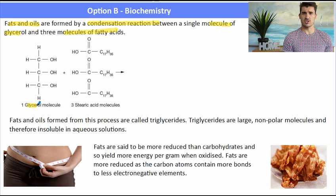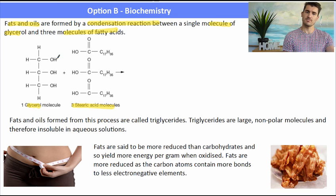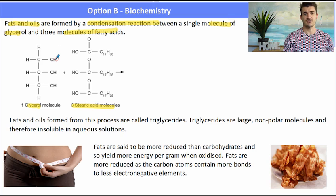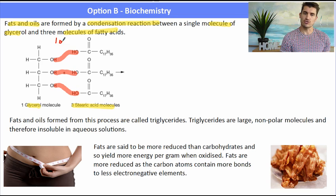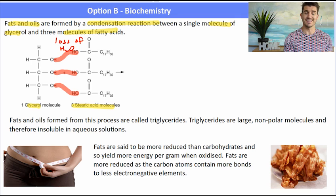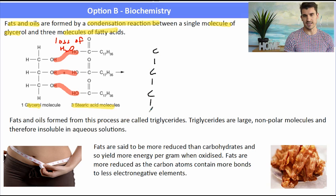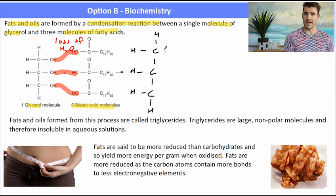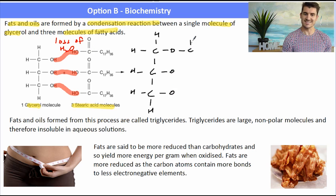Fats and oils are formed by a condensation reaction between a single molecule of glycerol and three molecules of fatty acids. Here we have a molecule of glycerol on the left and on the right we have three stearic acid molecules — three fatty acid molecules. When these two things react in a condensation reaction, we eliminate water from the link between these two molecules. Water is lost and what happens is we form an ester link between those two molecules. We have our glycerol backbone and then we are linking the two molecules with an ester link.